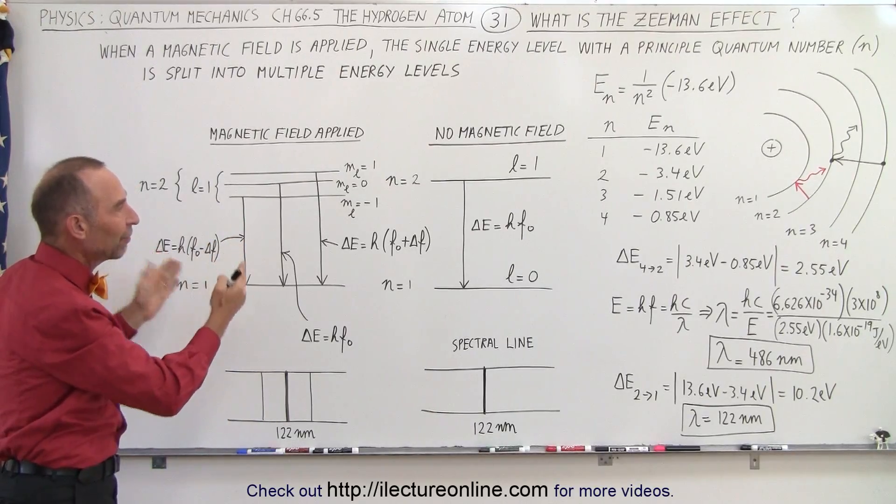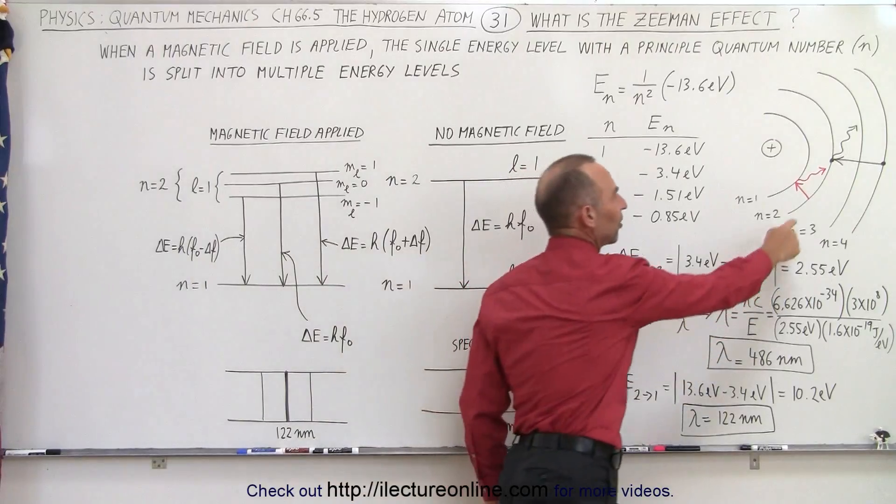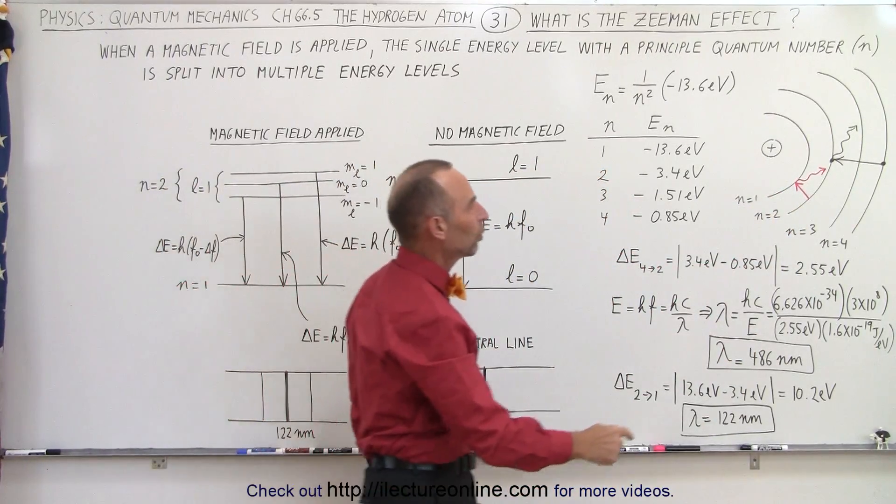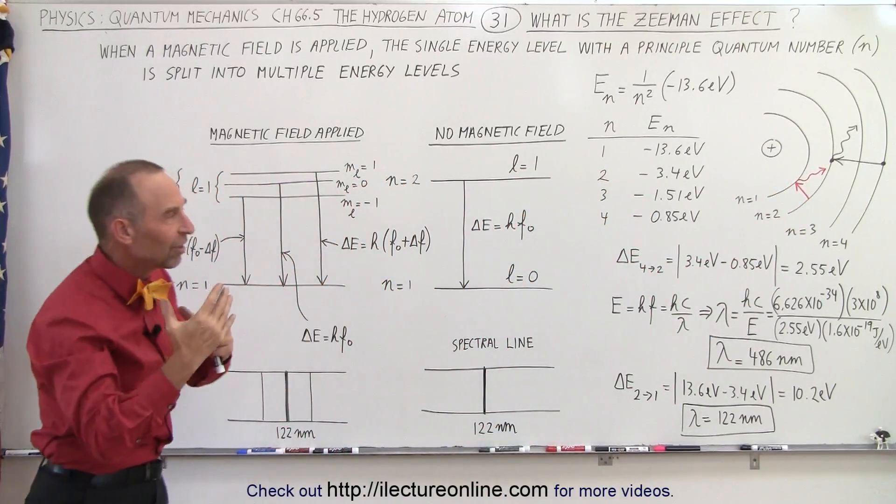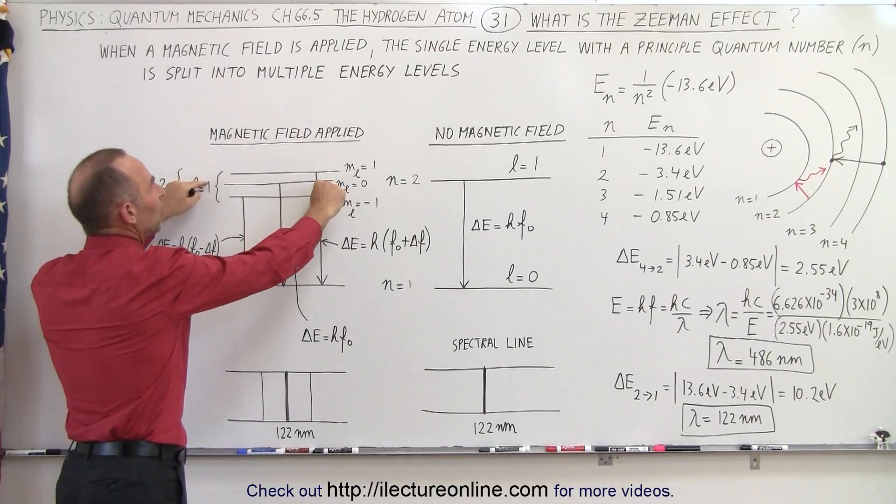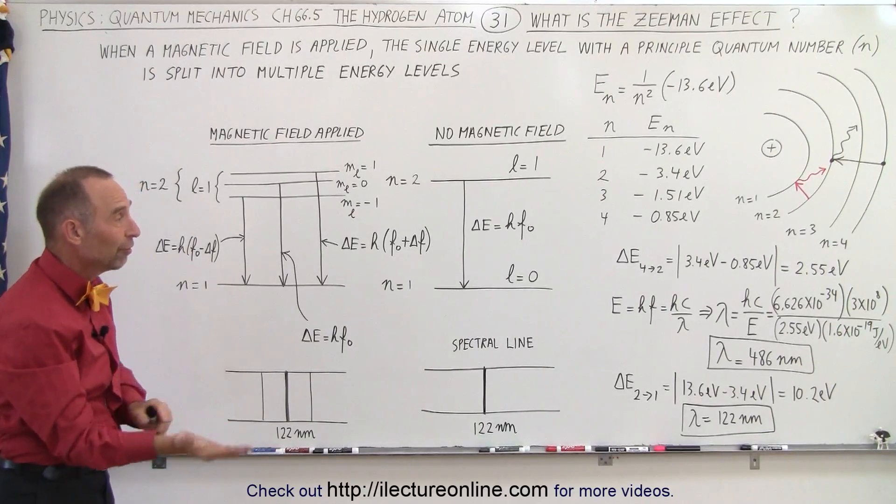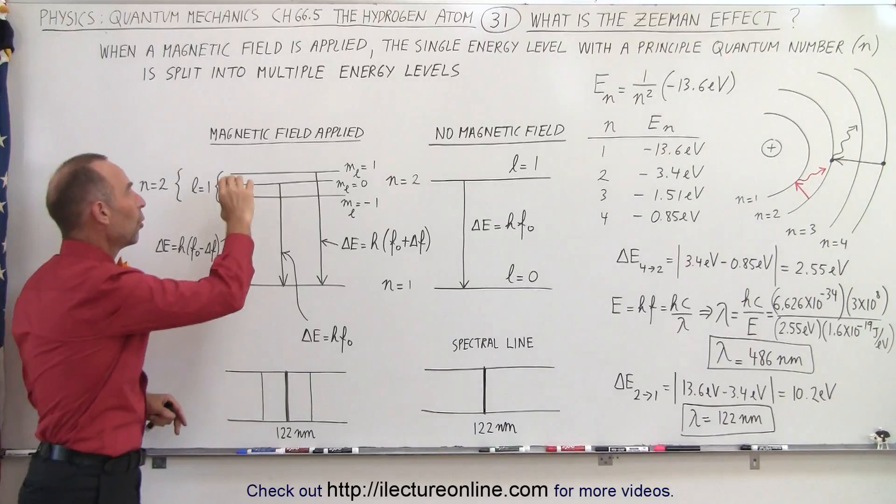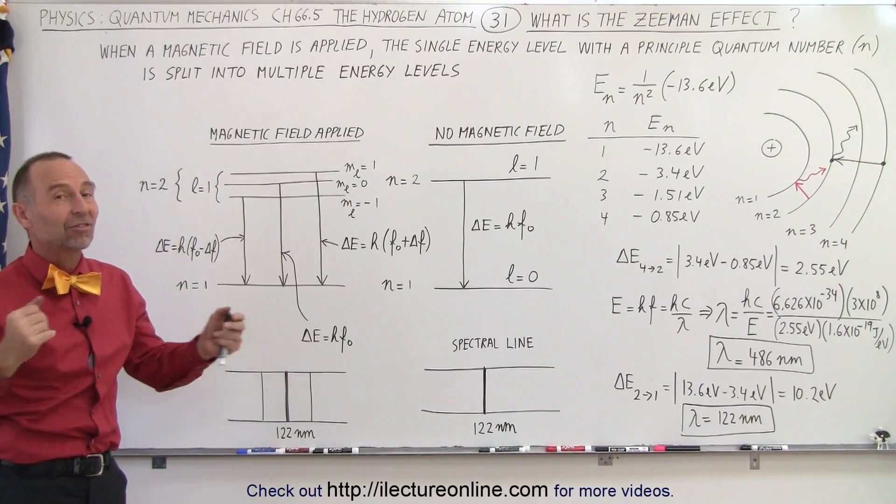That discovery was known as the Zeeman effect. You apply a magnetic field, and instead of having a single line associated with the jump from the second to the first level, we now have three different lines, indicating that something was happening. There were more energy levels now, slightly different from the original energy level when a magnetic field was applied. Now we know that's due to the fact that the angular momentum has three different orientations within that specific energy level when L equals 1. And that's the Zeeman effect.